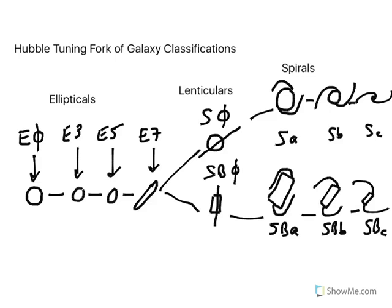Now what about the last category, the irregulars? Anything that didn't fit into the elliptical classification or the lenticular classification or the spiral classification was put into the irregular classification. And so we will draw the irregular classification as this unshaped blob out into the center and off to the right of the tuning fork.